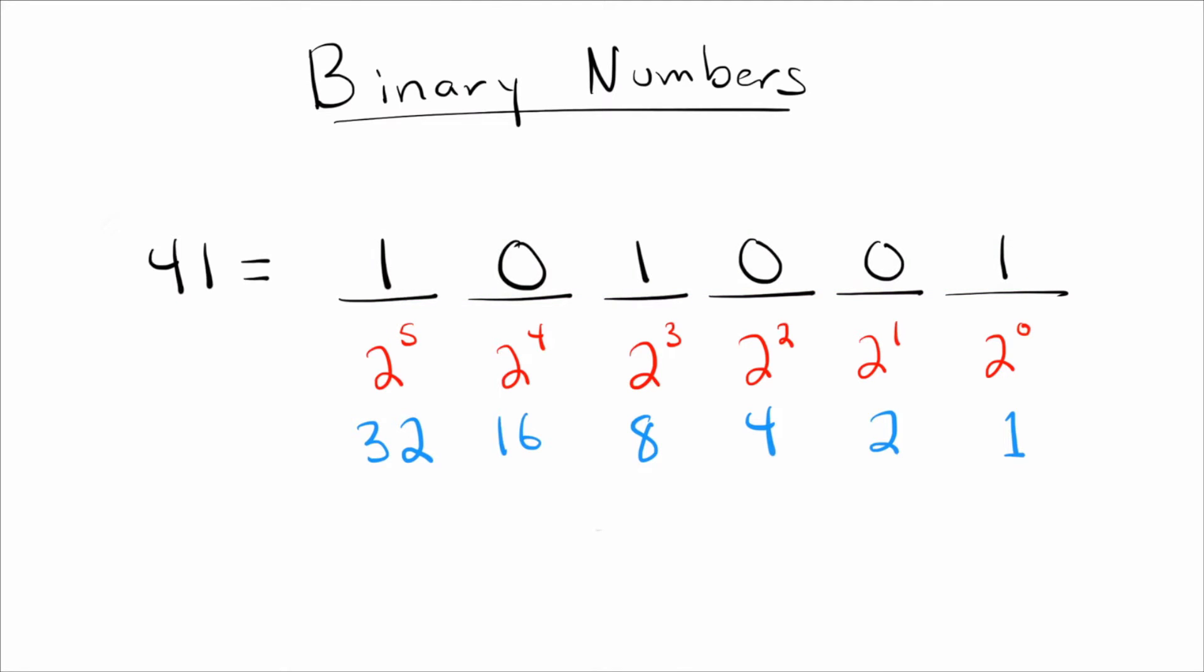Okay, so so far, we've been taking a number, what we would call a base-10 number, and we've been writing in binary. Let's go ahead and do it backwards. Let's take a binary number and write it as a normal number, as a base-10 number. So I'll just go ahead and make some stuff up here. Let's do 110001, say.